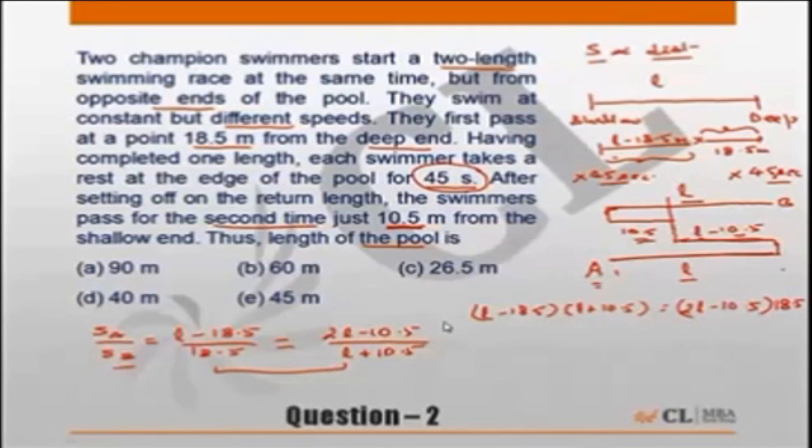Now please remember the rule to be followed is simplify the equation. Simplify the equation to the maximum possible level and then substitute the choices if required. But first simplify the equation. So on simplifying we will get L into L, L square plus 10.5L, which is L into 10.5, then we will have minus 18.5L, and then we will have minus 18.5 into 10.5. So minus 18.5 into 10.5.